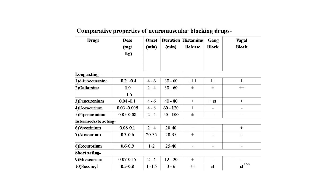Atracurium — dose 0.3 to 0.6 mg/kg, onset 20 to 35 minutes, duration 20 to 35 minutes, histamine release, no ganglion block, no vagal block. Rocuronium — dose 0.6 to 0.9 mg/kg, onset 1 to 2 minutes, duration 25 to 40 minutes, no histamine release, no ganglion block, no vagal block.